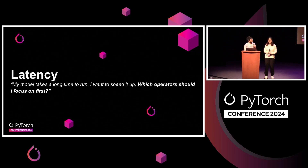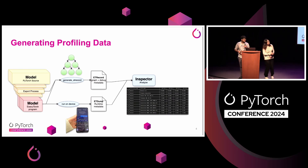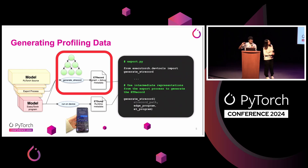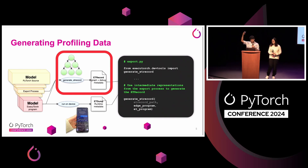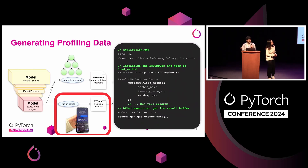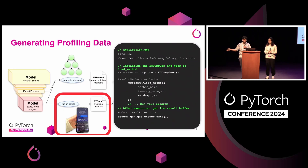First, let's take a look at latency. Oftentimes model developers will come to us and say my model takes a long time to run and I want to speed it up — how do I know which operators to focus on first? So we have a process for generating profiling data. First, we generate what's called an ET record. This is an artifact that contains information about the graph and is able to associate different nodes of the graph from the source code all the way down to the graph at runtime for the Executorch program, since the graph does change. You can generate this artifact in your export script or notebook whenever you're lowering the model from source to Executorch. Next, when you're running the model on device, we generate what's called an ET dump — this is your runtime information at an operator granularity. You include the header, initialize the runtime, pass the ET dump gen there, and it'll automatically track your operator-level latencies and dump that out to a file. Using a compile flag, you can choose whether or not to activate this.